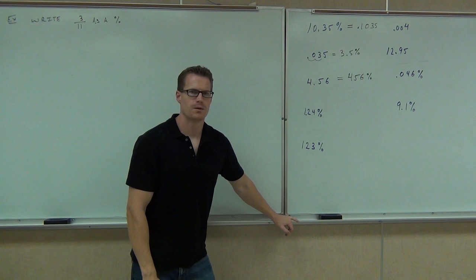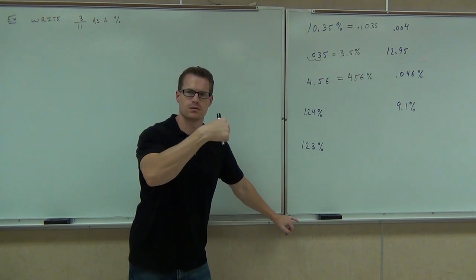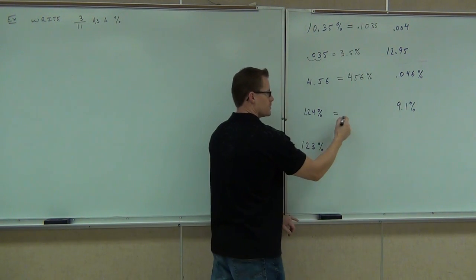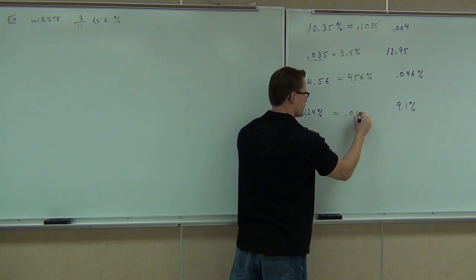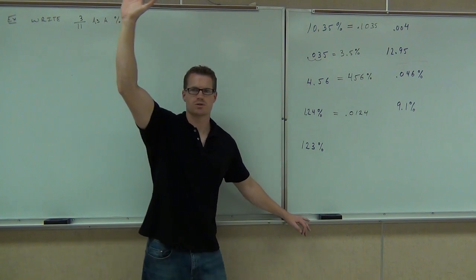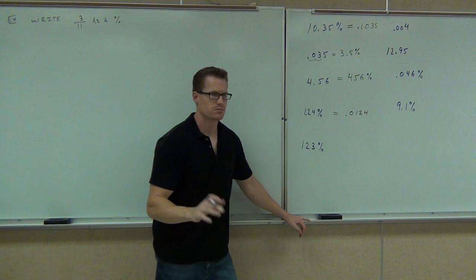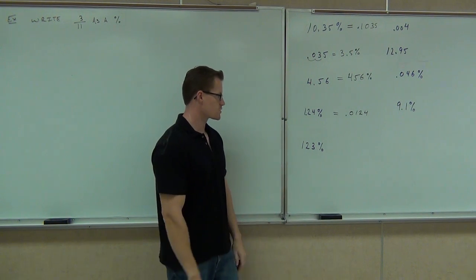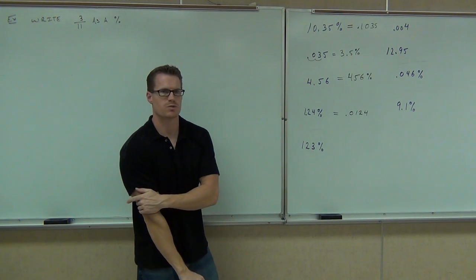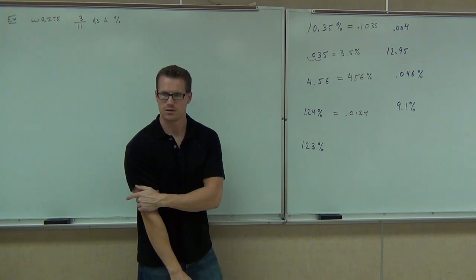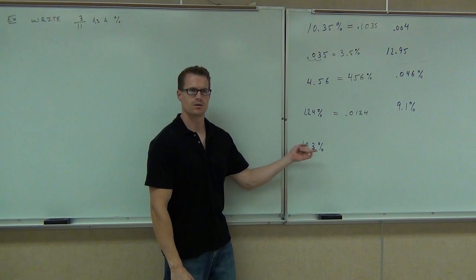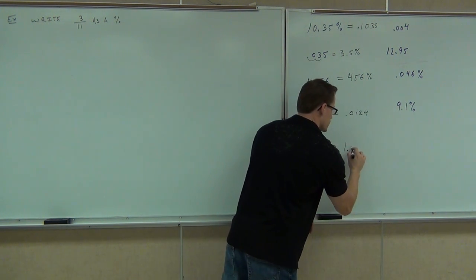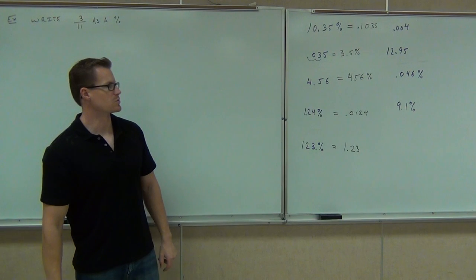1.24% — left or right? Left. Two spots, so you get 0.0124. The percent should look like a bigger number than the decimal. How about 123%? You've got to create a decimal — move in two spots to the left and you get 1.23. Now I've got a decimal and I need to make a percent out of it — moving to the right two spots, you get 0.4%. Don't forget the percent sign. Then 12.95 — no percent, so multiplying by 100 moving right two spots: you get 1,295%.